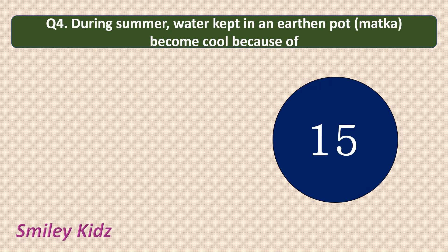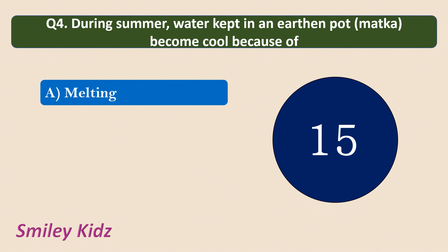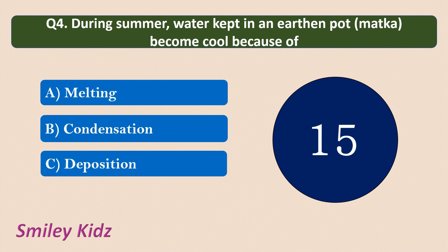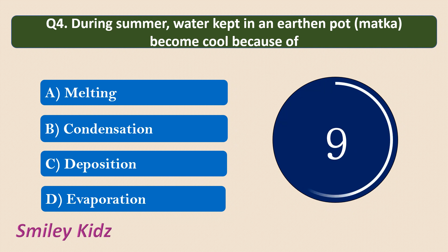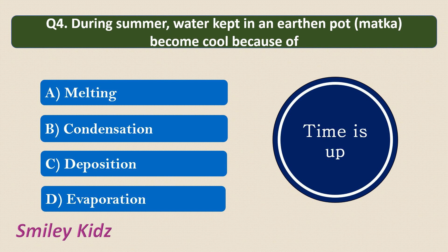Question number 4. During summer, water kept in an earthen pot — that is matka — becomes cool because of? Options are: melting, condensation, deposition, or evaporation. The correct answer is evaporation. Water kept in an earthen pot becomes cool because of the process of evaporation.